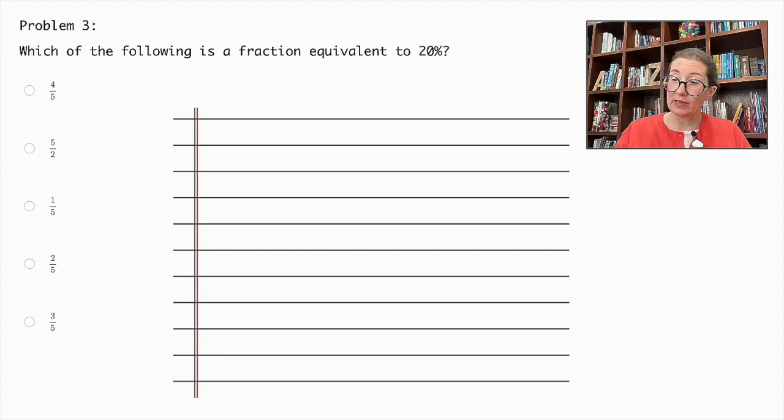Right away we can eliminate 5 over 2. 2 over 2 would be 100% and this is greater than that. So it cannot be 20%. So that is incorrect. So now what is 20% in fraction form?